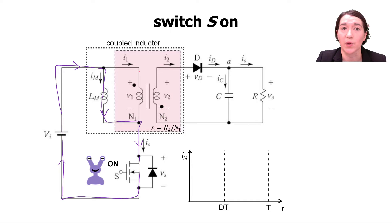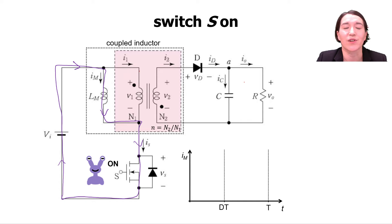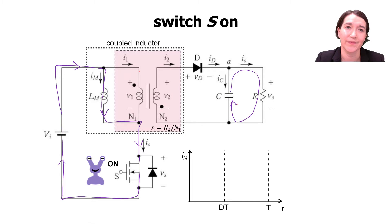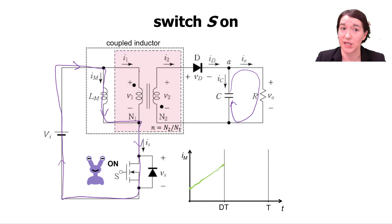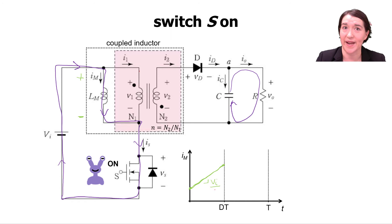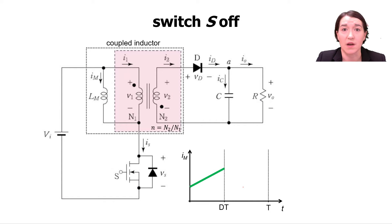There will be no current going into the ideal transformer of the coupled inductor. There is one more current path: current comes out of the capacitor and goes to the load, holding up the output voltage. The current through the magnetizing inductance rises linearly from zero to dT, with a slope of Vi divided by L, since the full input voltage is applied across it.